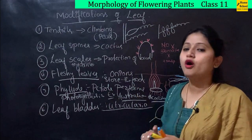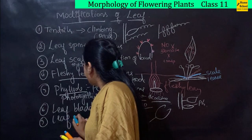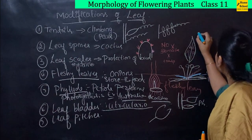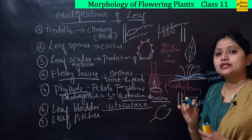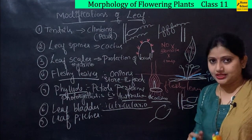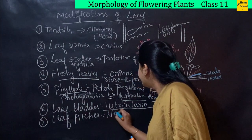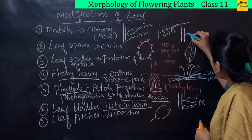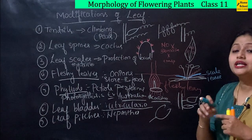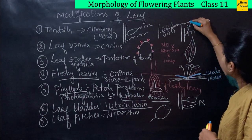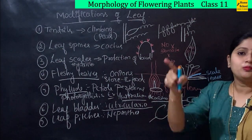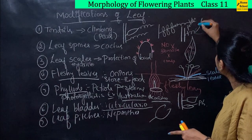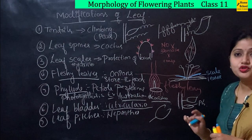Another modification is the leaf pitcher, seen in Nepenthes. In Nepenthes, there is a coiled petiole, and instead of a normal leaf, the leaf is in the shape of a pitcher. The leaf has a leaf margin, lamina and an apex part, but the lamina is modified into a pitcher structure.